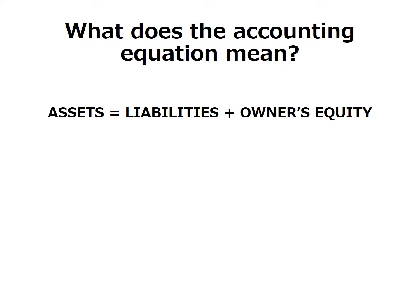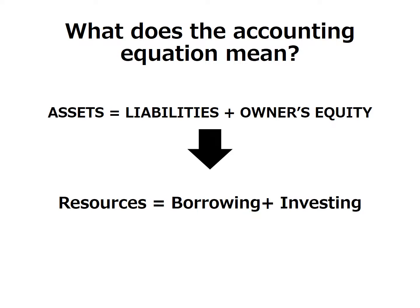The accounting equation tells us a very simple concept about doing business. In order to start and continuously operate a business, we have to have resources or assets. No business can operate without assets. The business gets its assets either through borrowing, represented by liabilities, or investing, represented by owner's equity.